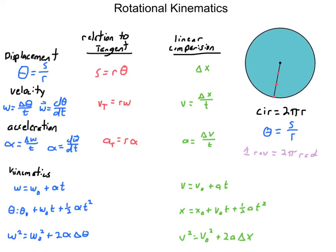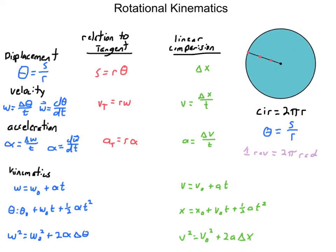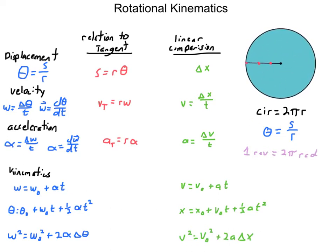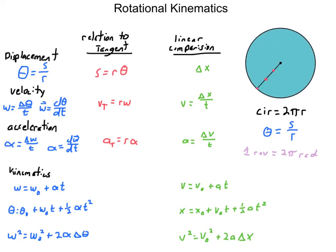All three points are going through the exact same angle at the exact same time. So if you think about angular velocity - how quickly you pass through an angle - they're all moving at the same rate. The arc length S, or displacement around the circle, means that theta, the angle you pass through, equals the displacement around the outside of the circle divided by the radius.